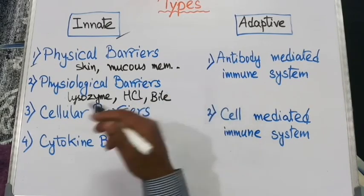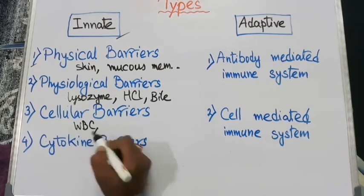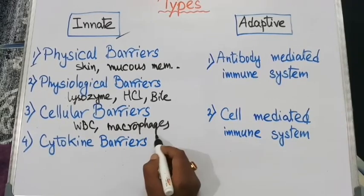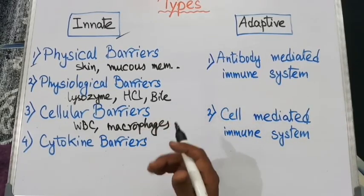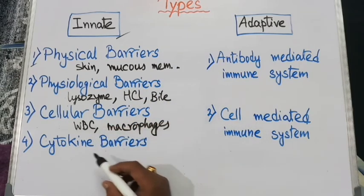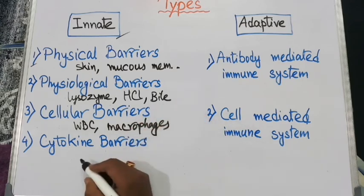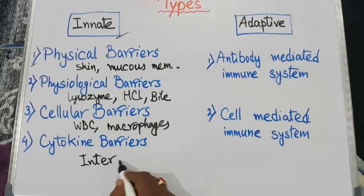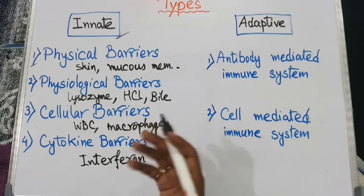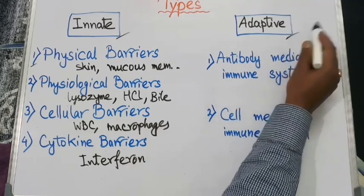The next component of the innate immune system is cellular barriers. Different types of WBC, macrophages, NK cells, and dendritic cells help build a cellular barrier. The next type is the cytokine barrier — a special chemical known as interferon, which is secreted against viral infection and fights against viral diseases.